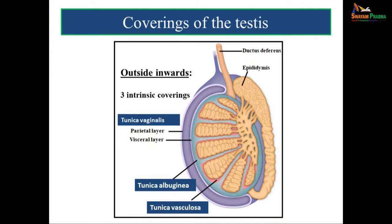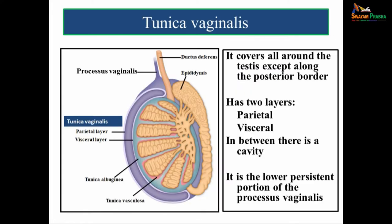There are three intrinsic coverings, from outside inwards: tunica vaginalis, tunica albuginea, and tunica vasculosa. The tunica vaginalis is the outermost covering; it covers all around the testis except along the posterior border. Next to that is the tunica albuginea, a fibrous tissue covering. The innermost covering, which covers the lobules, is called the tunica vasculosa.